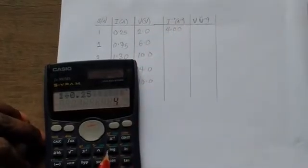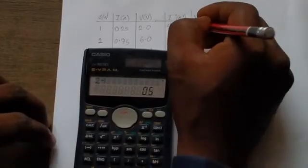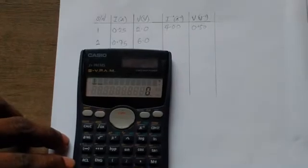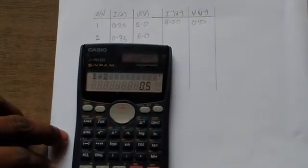If I want to find reciprocal voltage, that will be 2 reciprocal. That will give us 0.50. It's the same thing I'm saying, 1 divided by 2. You get that, that's the meaning of reciprocal. Alright, this is the complete table now. We have found the reciprocal of the current and that of the voltage.